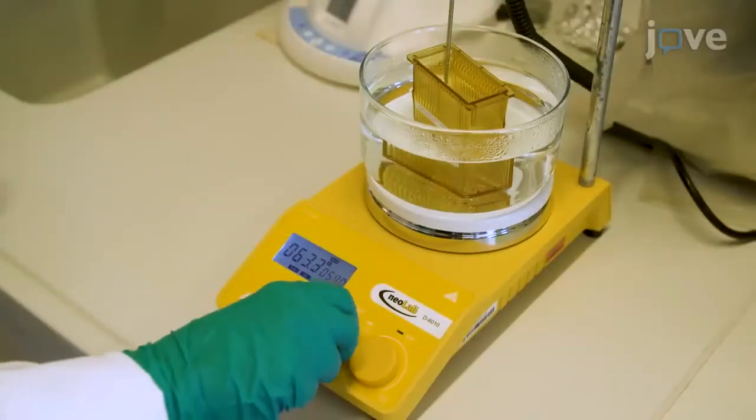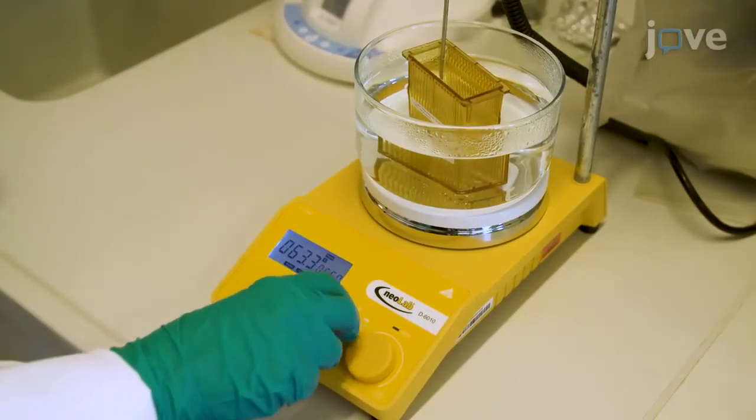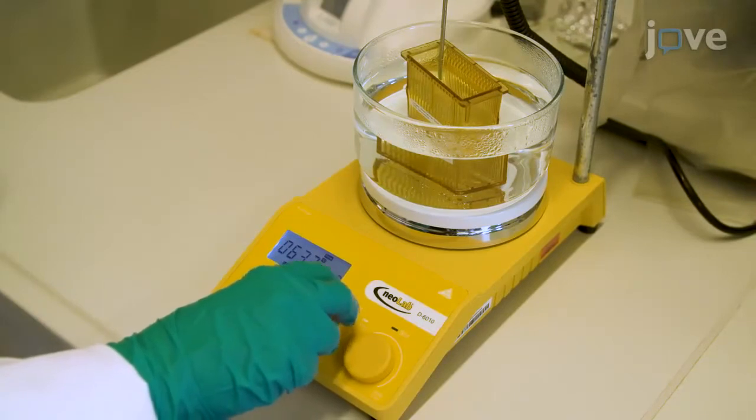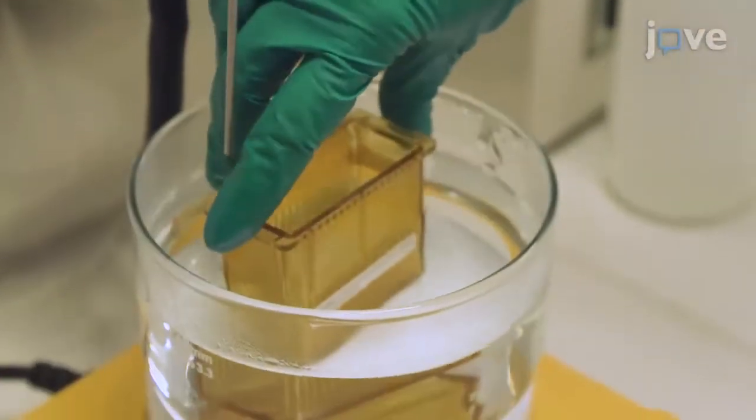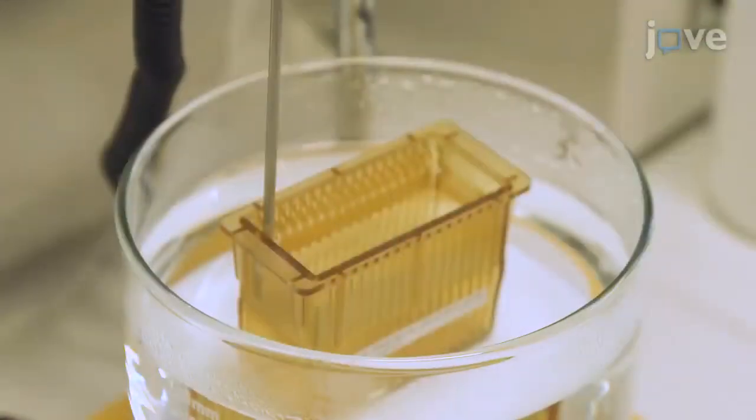Next, heat a water bath with a temperature-controlled hot plate to 70 degrees Celsius. Place a jar filled with heat-induced epitope retrieval buffer and 10% glycerol into the water bath.